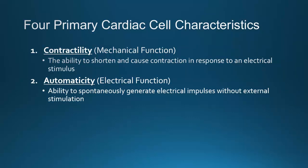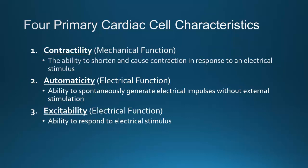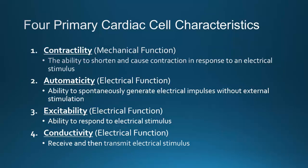Automaticity is very unique — it is the ability to spontaneously generate electrical impulses without any external stimulation at all. Then you've got excitability, which some books may call irritability — essentially the cell's ability to respond to an electrical stimulus. And then conductivity: think of the cardiac cells as a network of power lines that send electrical conduction from one transformer to the other through the transmission of electrical signals.